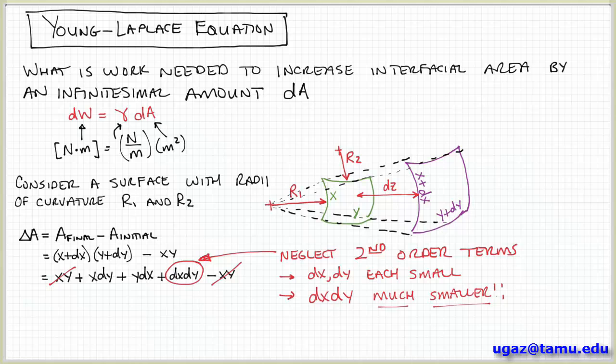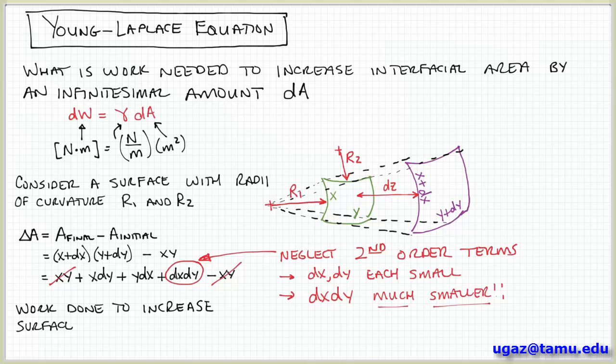So I can neglect it compared to these other two terms. So that allows me to simplify the expression for the area. So I can plug it back in to our relationship up here. So the work associated with this change in interfacial area is the surface tension coefficient gamma times dA, which is x dy plus y dx.